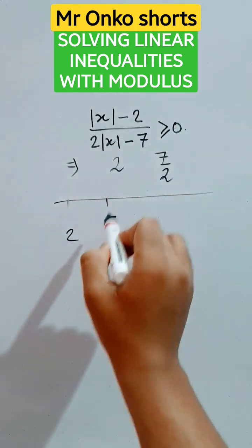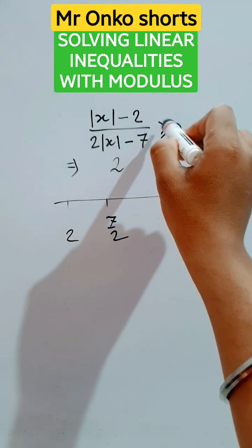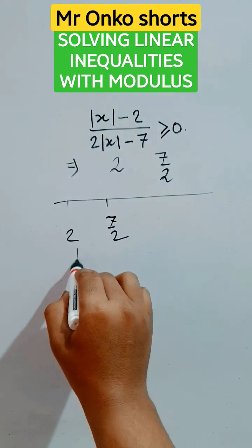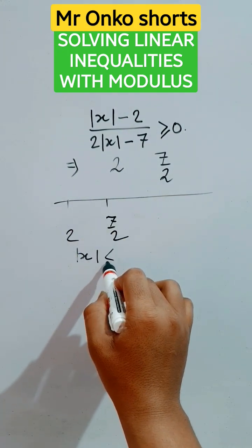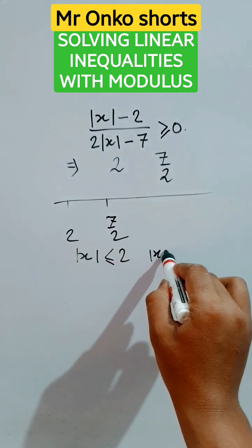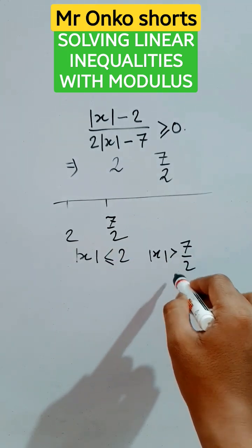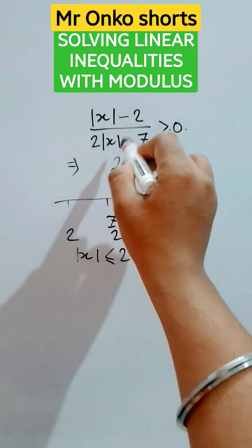Now just think about the sign. The open mouth is towards the variable, so the mod x will be less than the smaller one. Equals to will be held and here it will be greater than 7 by 2. Equality will not be there since it's in the denominator.